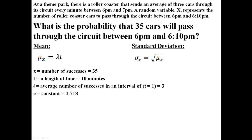We know that x refers to the number of successes — in this case, we want to know the probability of 35 cars passing through. t refers to the length of time; between 6 and 6:10 p.m., we have 10 minutes. Lambda refers to the average number of successes in a one-minute interval; in this case, there are three passing through the circuit every minute.